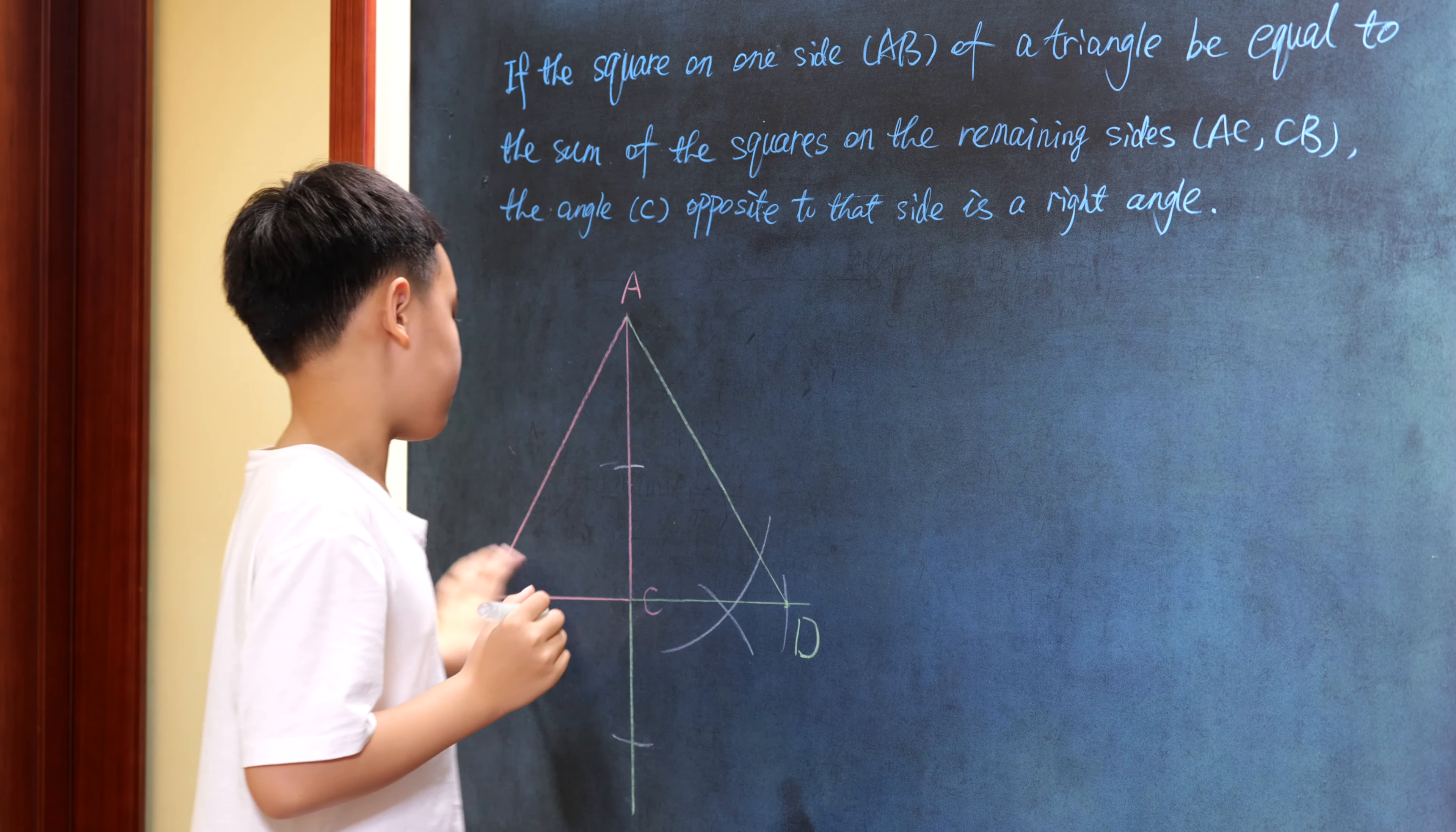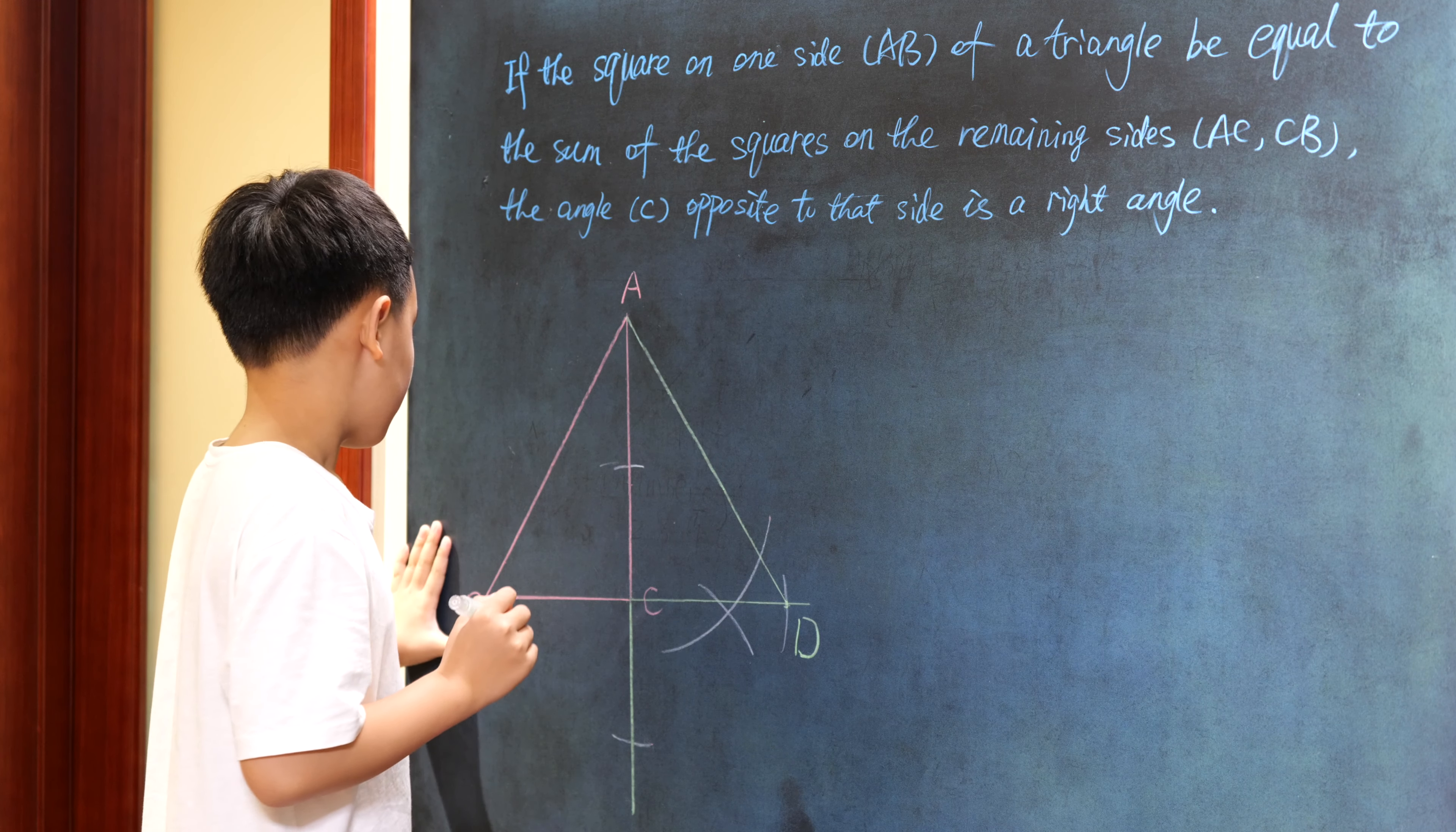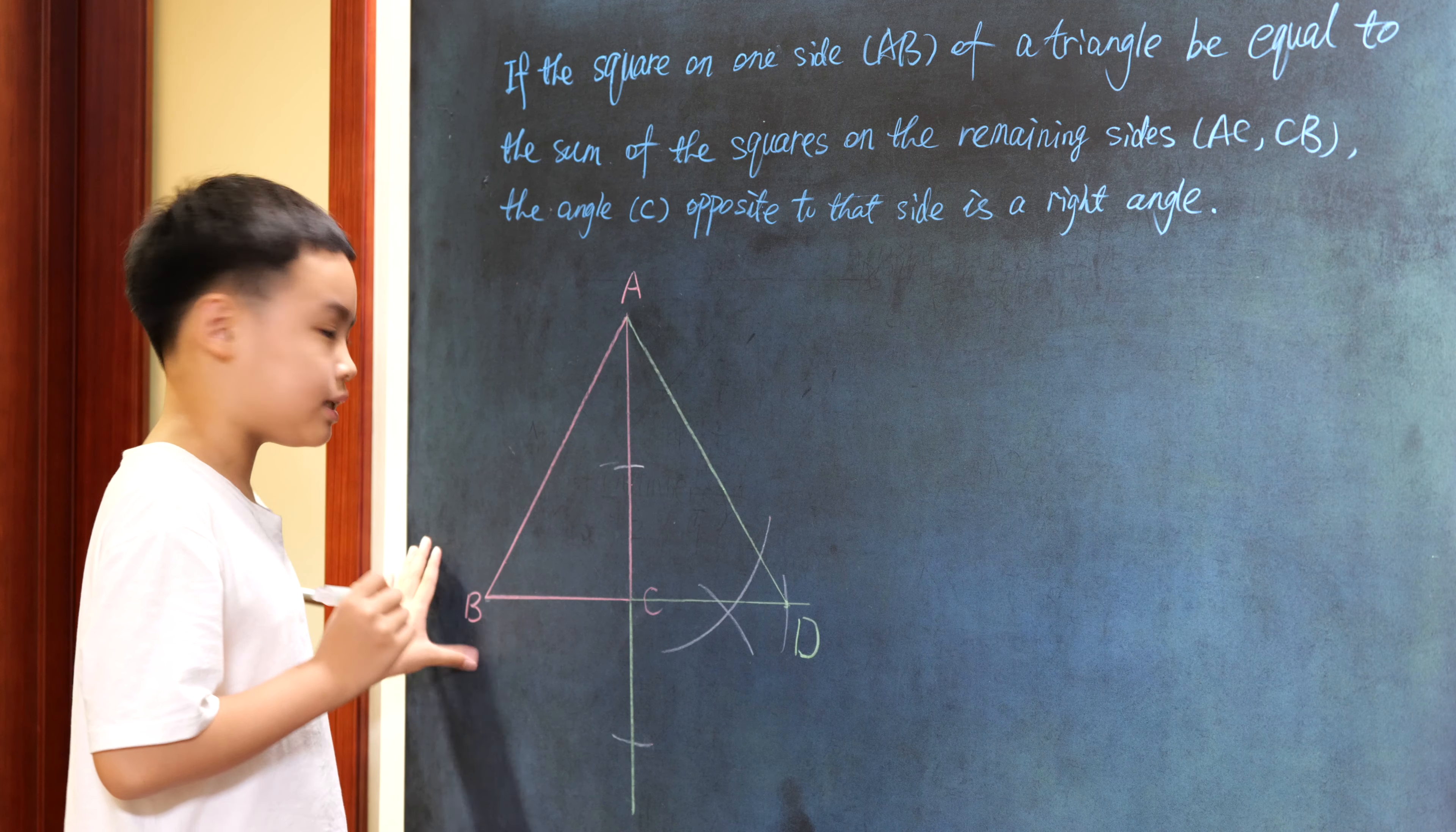And then, we have a right-angled triangle called ABC. And we have the square on the line AB is equal to the sum of two squares on two lines AC and CB.